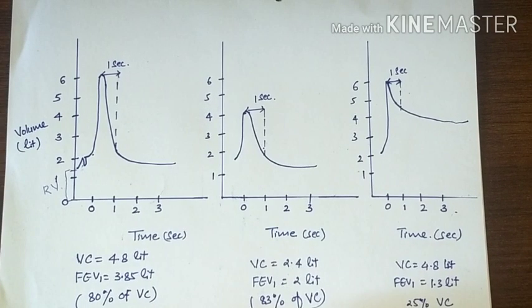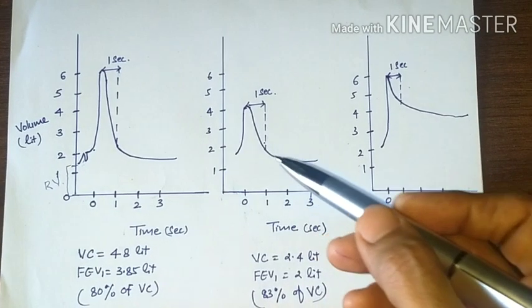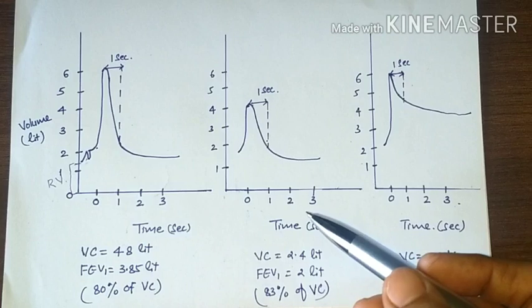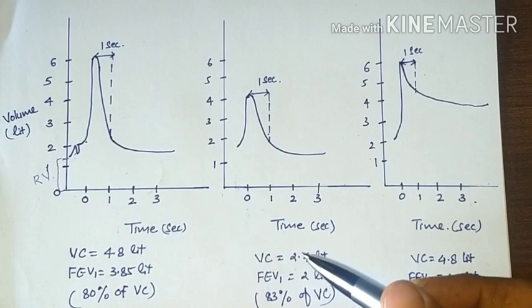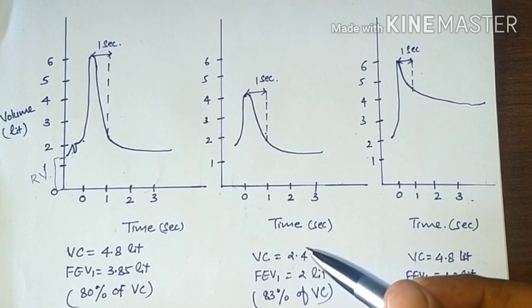So we can differentiate obstructive and restrictive lung diseases by this forced vital capacity as well as FEV1, FEV2, and FEV3. So this is all about forced vital capacity or timed vital capacity. Thank you.